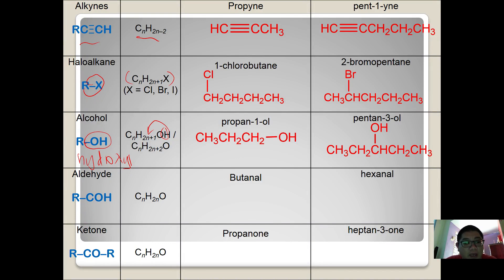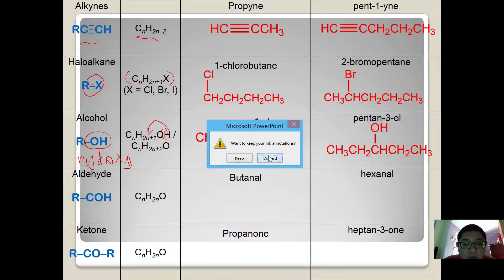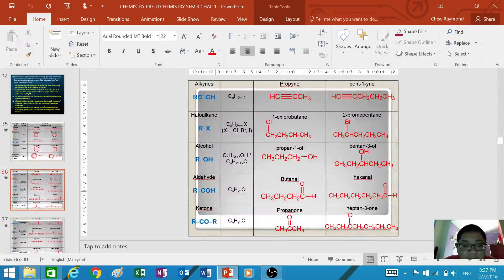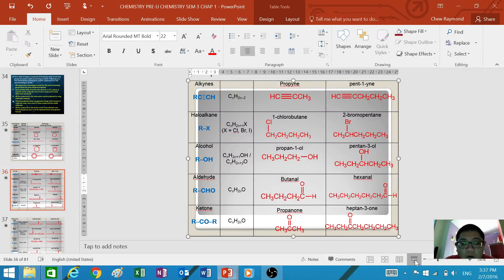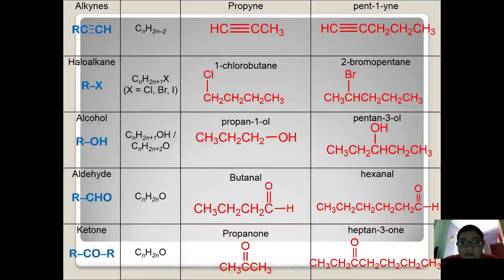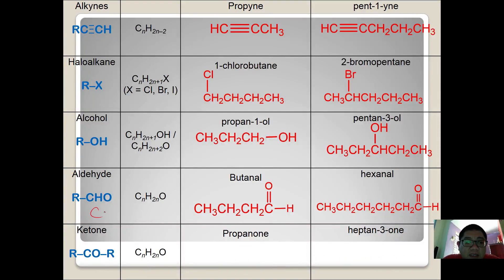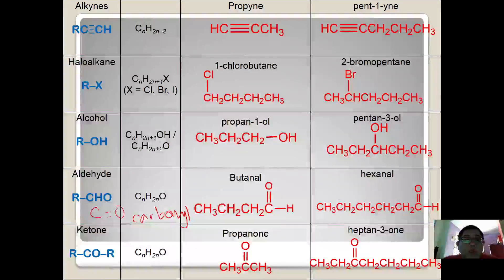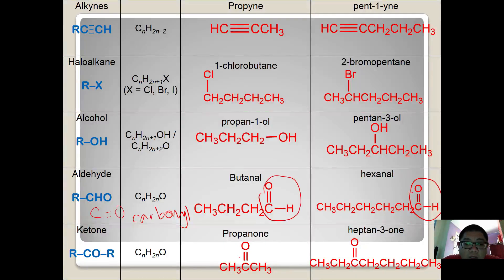Aldehyde has the functional group CHO. Both aldehyde and ketone share the same functional group of C double bond O, and for this reason they are called carbonyl compounds. A carbonyl compound can be divided into two types: aldehyde, which has the C double bond O at the end of the chain (as CHO), and ketone, where the C double bond O is located between two carbon atoms. Both share the same general formula.